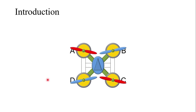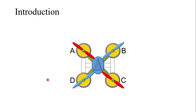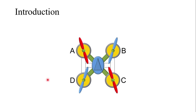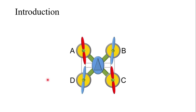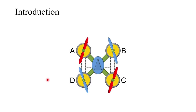A quadcopter gets its name due to the presence of four propellers. If it has six propellers it is known as a hexacopter; if it has eight propellers it is known as an octacopter, and so on. A quadcopter flies due to the thrust produced by the four propellers, and a BLDC motor is used to rotate these propellers since they have light weight, the ability to rotate at high RPMs, and high efficiency.